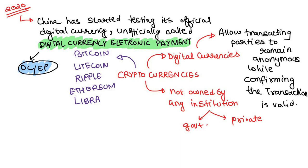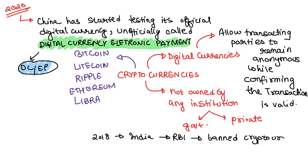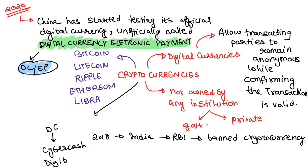Right now it is not official because pilot testing is going on. It could be considered the world's first central bank digital currency if it is officially issued by the People's Bank of China. In India, in 2018, RBI banned cryptocurrencies. Digital currencies are also known as cyber cash, digital money — currencies which can be transferred between entities with the help of technology like the internet, computers, and smartphones.